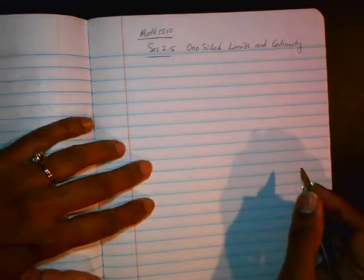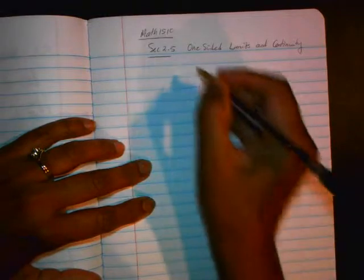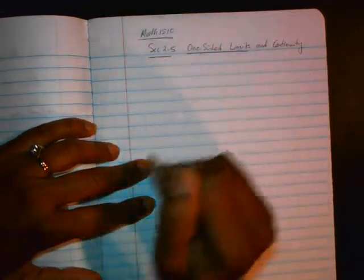Section 2.5: One-sided limits and continuity. In the previous section, when we talked about limits, we had been looking at limits from the left direction and the right direction, and we now in this section will give it a notation.